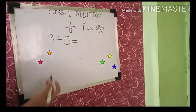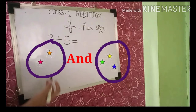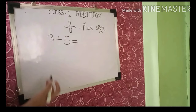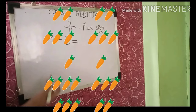Let us learn addition. See what we have — two stars and three stars. So how many stars will we get? Five stars. Yes, two and three, we will get five.